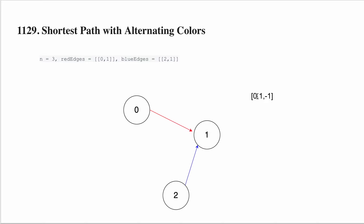For example, from 0 to 0, how many steps do you need? Zero, because you are already at the destination. From 0 to 1, you just need one step. From 0 to 2, you can never travel because there is no path, so it will be minus 1. One additional constraint is if you are traveling from one city to another, you cannot travel with the same color path consecutively — you have to alternate between red and blue.